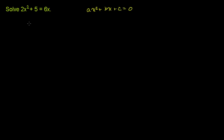To do that, we essentially have to take the 6x and get rid of it from the right-hand side, so we just have 0 on the right-hand side. Let's subtract 6x from both sides. Our left-hand side becomes 2x squared minus 6x plus 5 is equal to 0, as those two terms cancel out on the right.